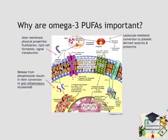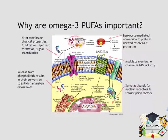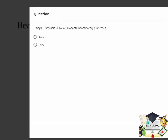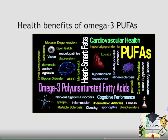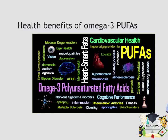Similarly, these long-chain omega-3 polyunsaturated fatty acids can also be converted into leukocyte-mediated conversion to platelet-derived resolvins and protectins, which help mediate positive outcomes of inflammation responses in biological cells. Lastly, these molecules can also modulate membrane channel and G-protein coupled receptor activity at sites of the membrane, while also serving as ligands for nuclear receptors and transcription factors within the nucleus itself.